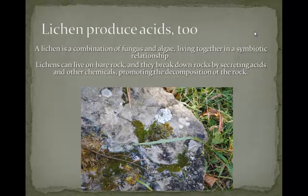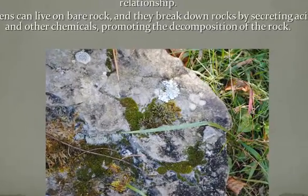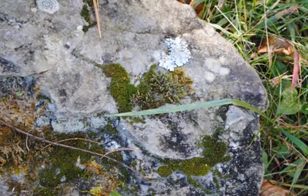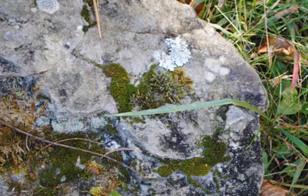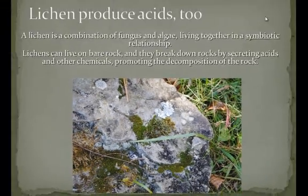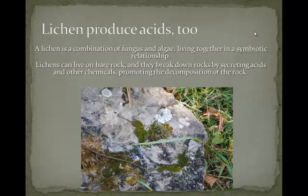Lichen produce acids too. A lichen is a combination of a fungus and an algae that live together in a symbiotic relationship — they're really quite interesting organisms. Lichen can live on bare rock, but when they do, they break down the rock by secreting acids and other chemicals that promote the decomposition of the rock.